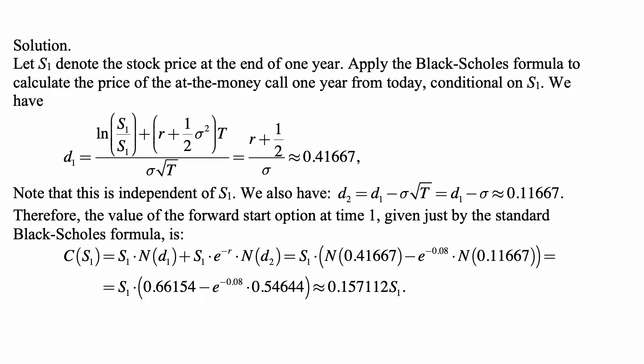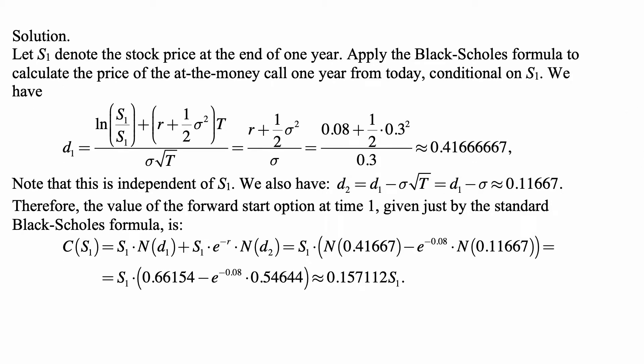For that application of the Black-Scholes formula, the parameter d1 will be equal to the natural logarithm of S1 divided by S1, and so that's zero because it's the natural logarithm of one, plus r plus one-half sigma squared times t. I decided to plug in the numbers to show you what the calculation exactly is. I noticed also that it should have said r plus one-half sigma squared there, so my apologies for the initial typo. But this becomes 0.08 plus one-half times 0.3 squared over 0.3, and that's approximately 0.41666667. This is of course independent of S1.